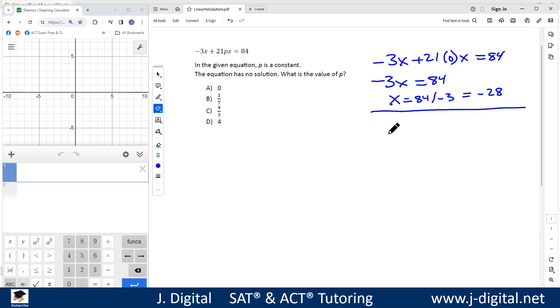All right, now if we try answer choice B, 1/7, do the same thing. Negative 3x plus 21 times 1/7 x equals 84. So we have negative 3x, 21 times 1/7, 21 divided by 7 is 3, so 3x equals 84. Negative 3x plus 3x is 0, so you get 0 equals 84.